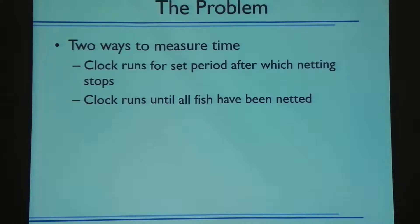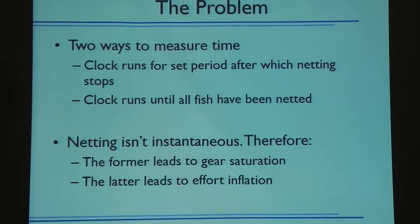There are two ways to measure time. First, total time: you keep the counter running and wait until all the fish have been netted, maybe trying to keep a constant speed. The other way is set transects — you say we're going to fish for 10 minutes, get all the fish we can, and when that's up, we stop. Even if there are fish floating over there, that's not part of it. Netting isn't an instantaneous process, so the first method can lead to gear saturation.